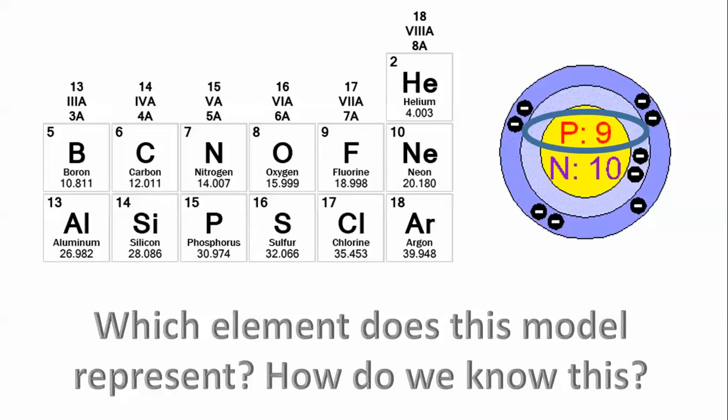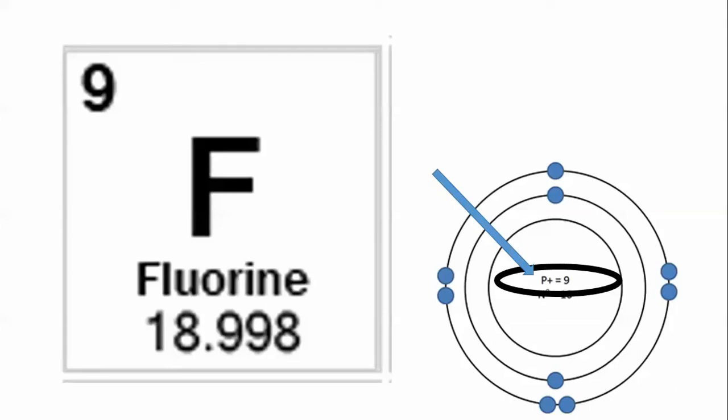Boom. Did you go to your protons? There are nine. Where do we see nine protons on the periodic table? Boom. Found it. This, wonderful student, is an atom of fluorine.